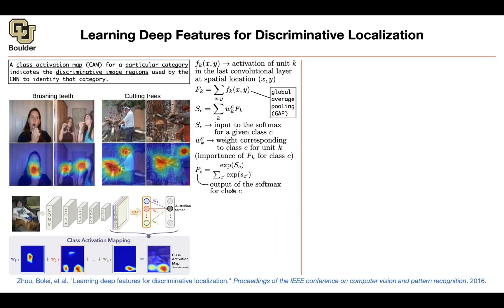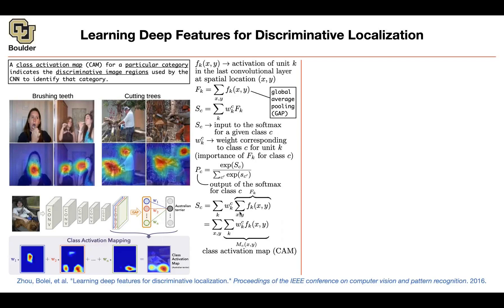Here is the key insight, and why global average pooling is important: global average pooling gives you fk, and sc is a linear combination of weights wkc times fk. Because everything is linear, you can move the summation inside — put wkc inside both summations. This gives you exactly the class activation map Mc, which represents the importance of activation at each spatial grid location (x, y) leading to that particular class c.